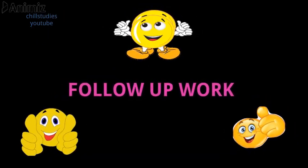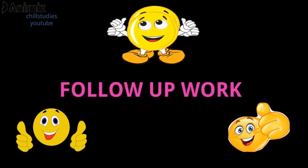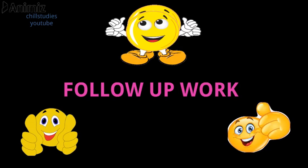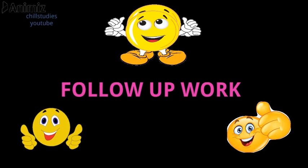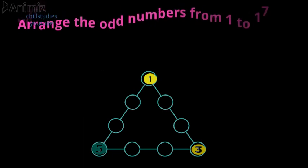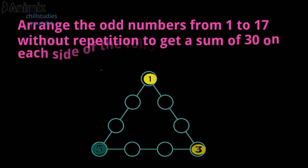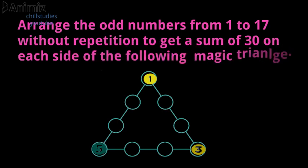Thank you, students. I hope that now you can understand how to frame magic triangles. Here is one follow-up work for you: arrange the odd numbers from 1 to 17 without repetition to get the sum of 30 on each side of the following magic triangle. Thank you.